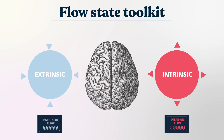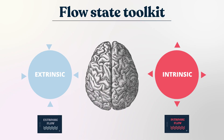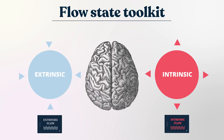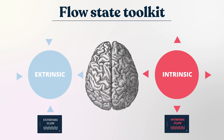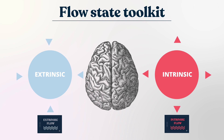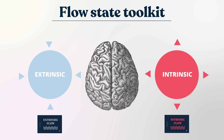Broadly speaking, the two hemispheres have two different flow states. The left flow state draws from outside, externally, and moves within — this is an extrinsic flow state. The right flow state draws from inside and moves out — this is an intrinsic flow state.